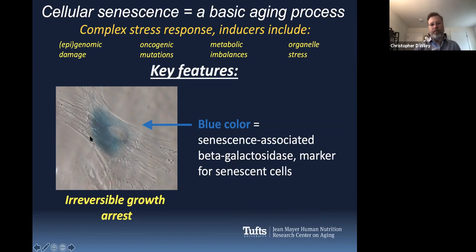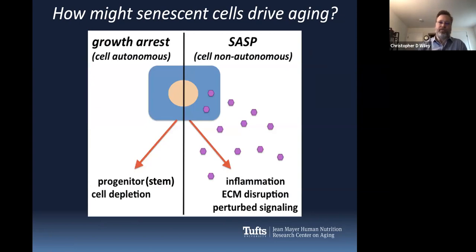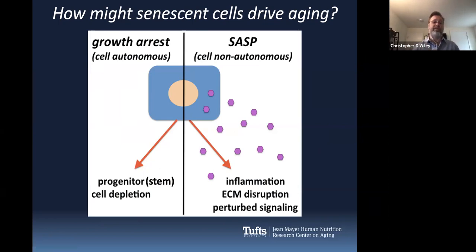We can identify senescent cells by staining them for an enzyme called senescence-associated beta-galactosidase, which gives them a blue color. So if I show you blue throughout the rest of my talk, I'm showing you increased senescent cells. The growth arrest is cell autonomous — it only affects that cell. If that cell happens to be a stem cell or other progenitor cell, it's not going to contribute in a meaningful way to that tissue ever again. If you have too many of those, you could imagine a situation where your body is unable to regenerate after injury.